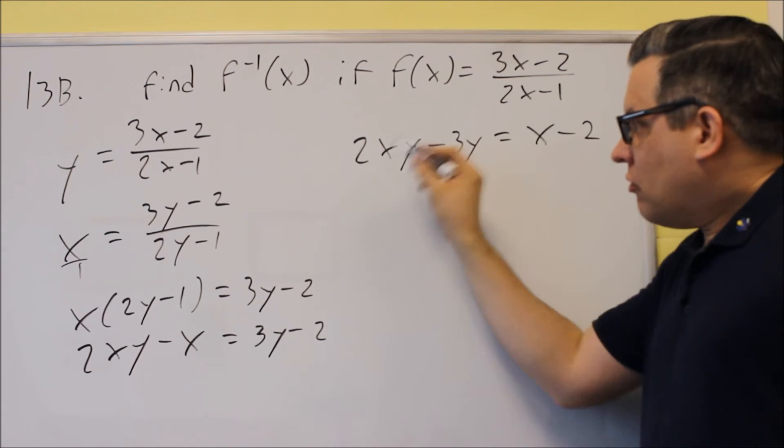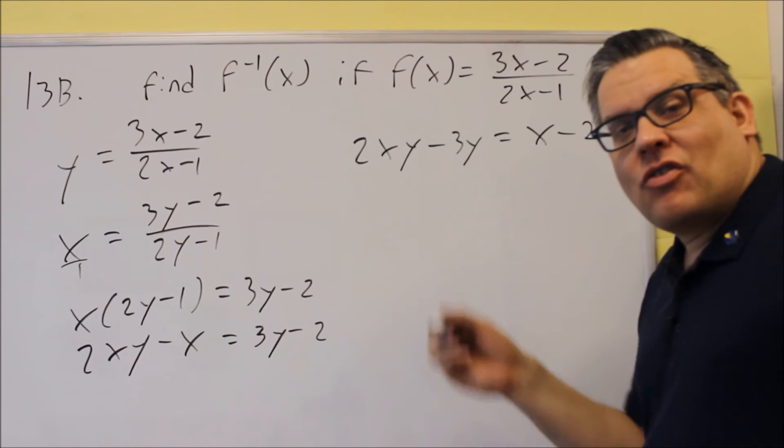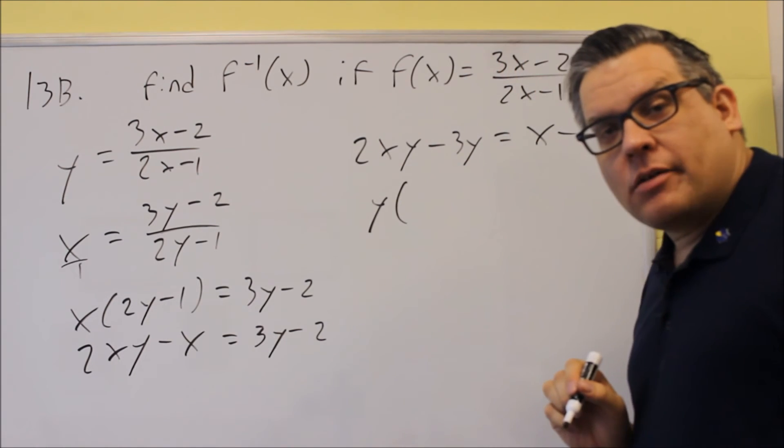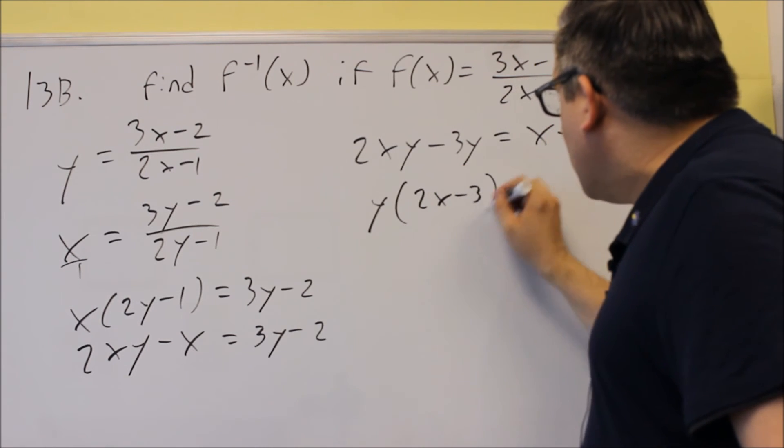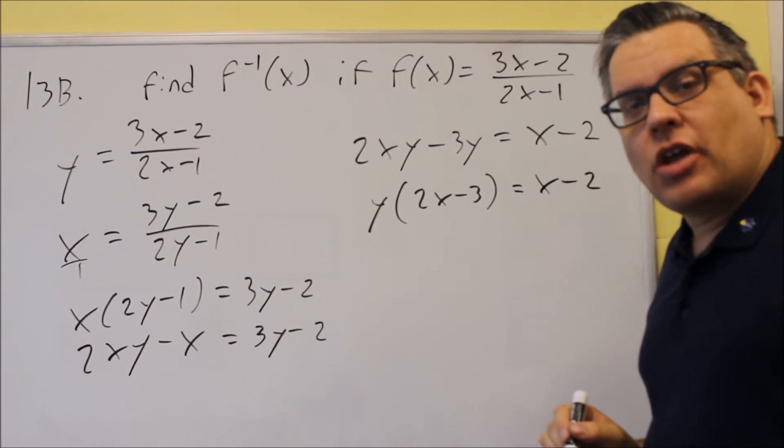So once I have it to where I have both the y's on one side of the equation, what I'm now going to do is factor out a y from both of these. So I'm going to factor out a y, and I get 2x minus 3 left over, and then I still have x minus 2 on the other side.